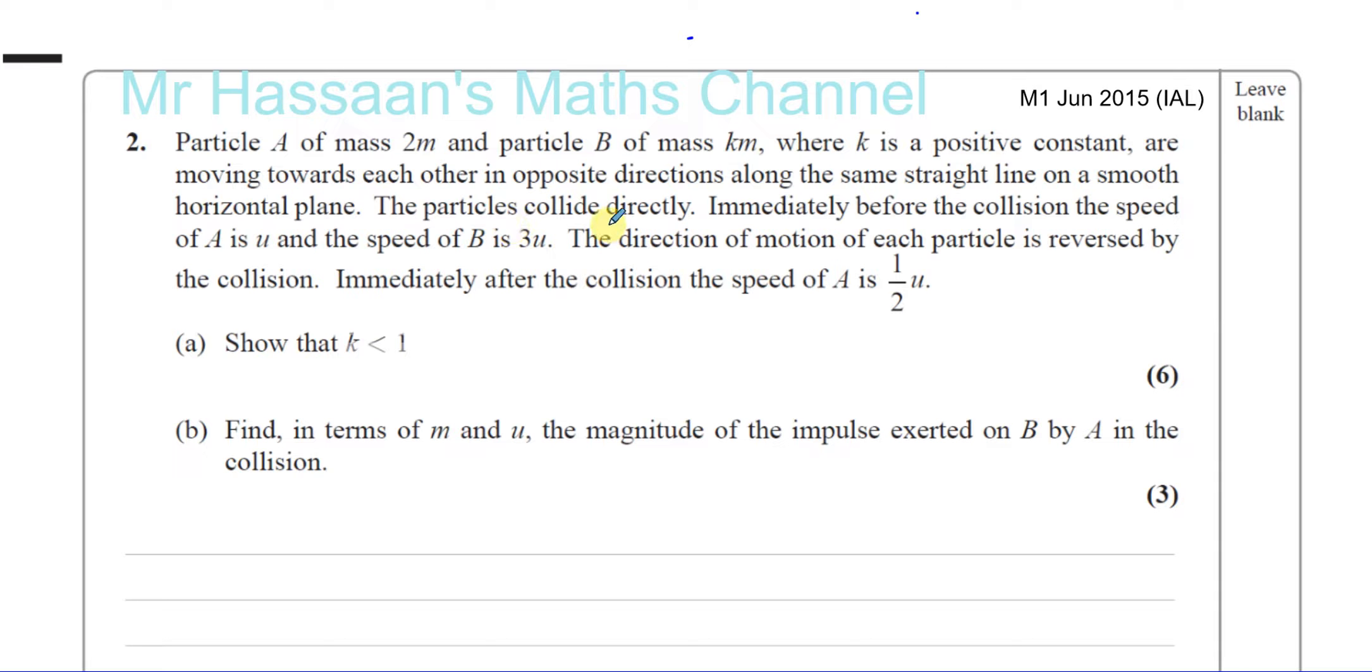The particles collide directly. Immediately before the collision, the speed of A is U and the speed of B is 3U. The direction of motion of each particle is reversed by the collision. Immediately after the collision, the speed of A is half U. Show that K is less than 1.